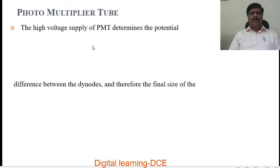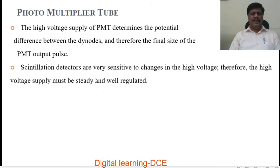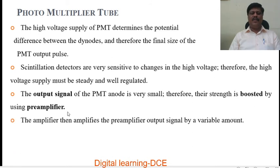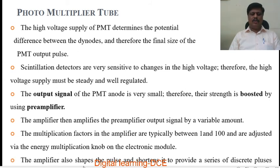The high voltage supply of the photomultiplier tube determines the potential difference between the dinodes and therefore the final size of the PMT output pulse. Scintillation detectors are very sensitive to changes in high voltage, so the high voltage supply must be steady and well regulated. The output signal of the PMT anode is very small, so its strength is boosted by using a pre-amplifier. The amplifier then amplifies the pre-amplifier output signal by a variable amount, typically between 1 and 100, adjusted via the energy multiplication knob on the electronic module. The amplifier also shapes the pulse and shortens it to provide a series of discrete pulses.